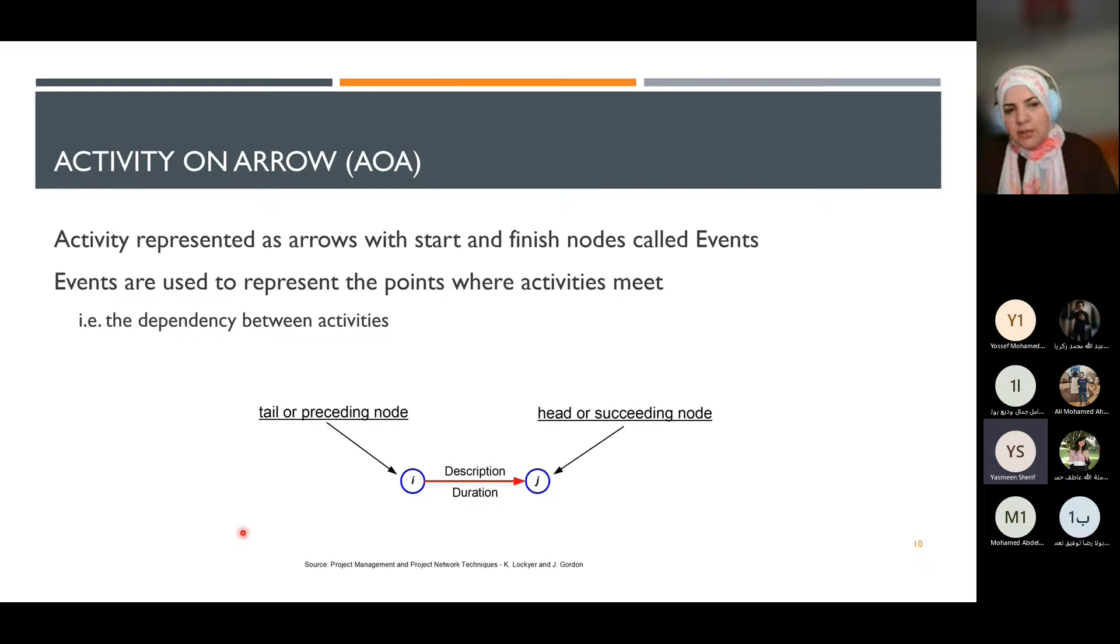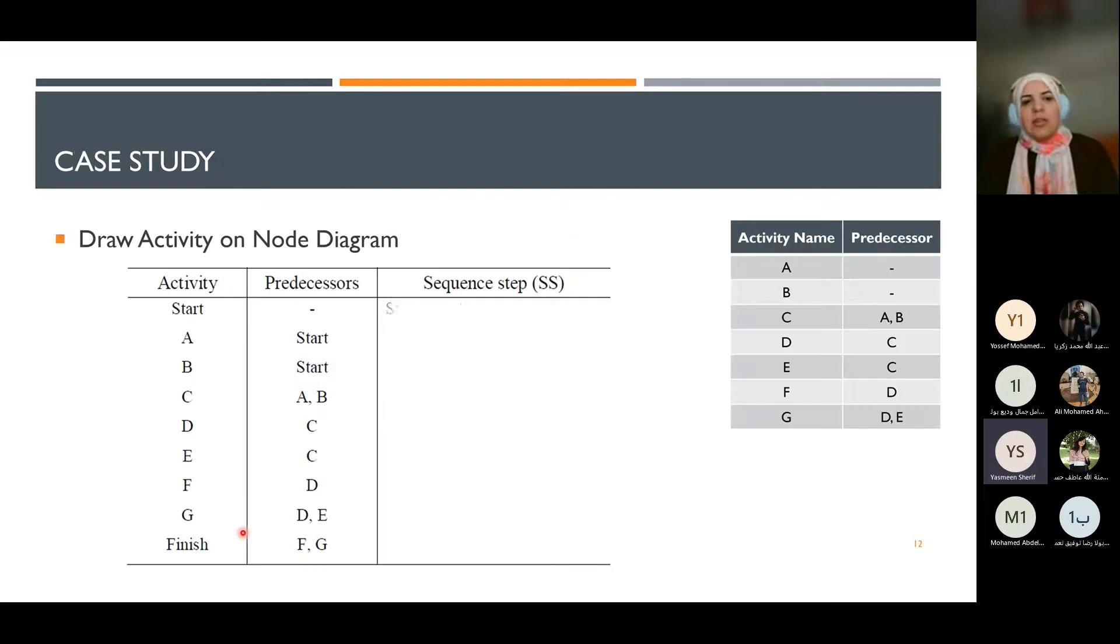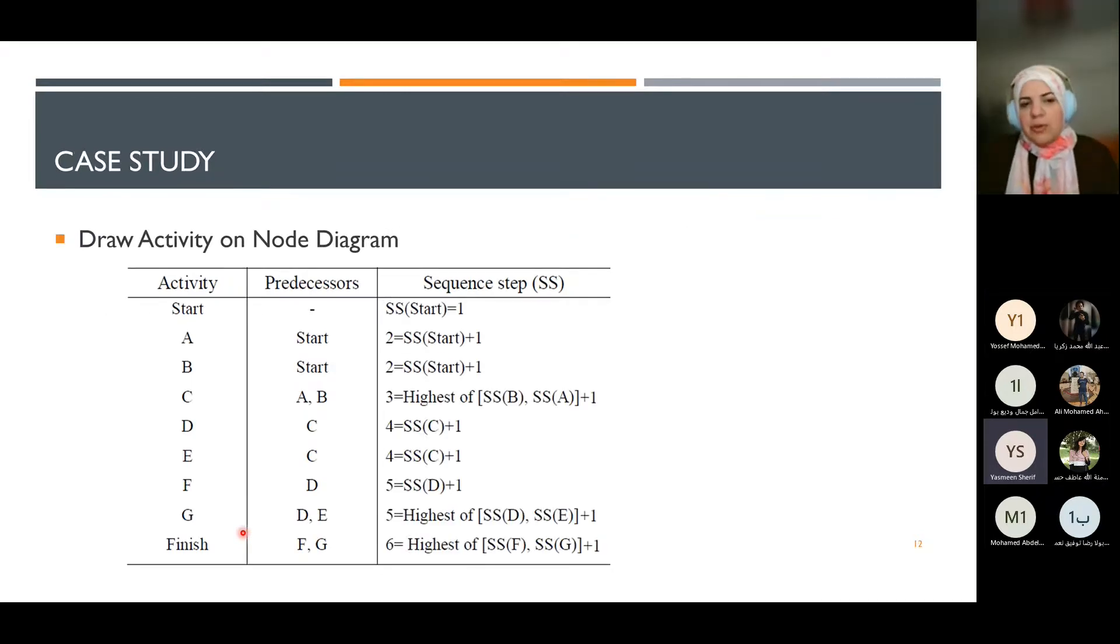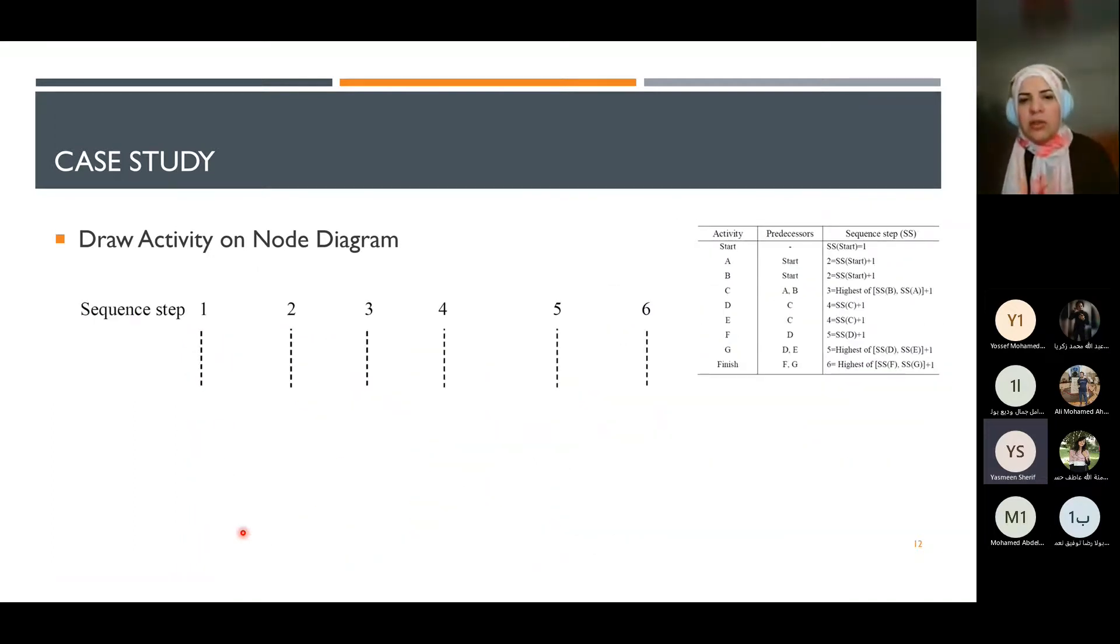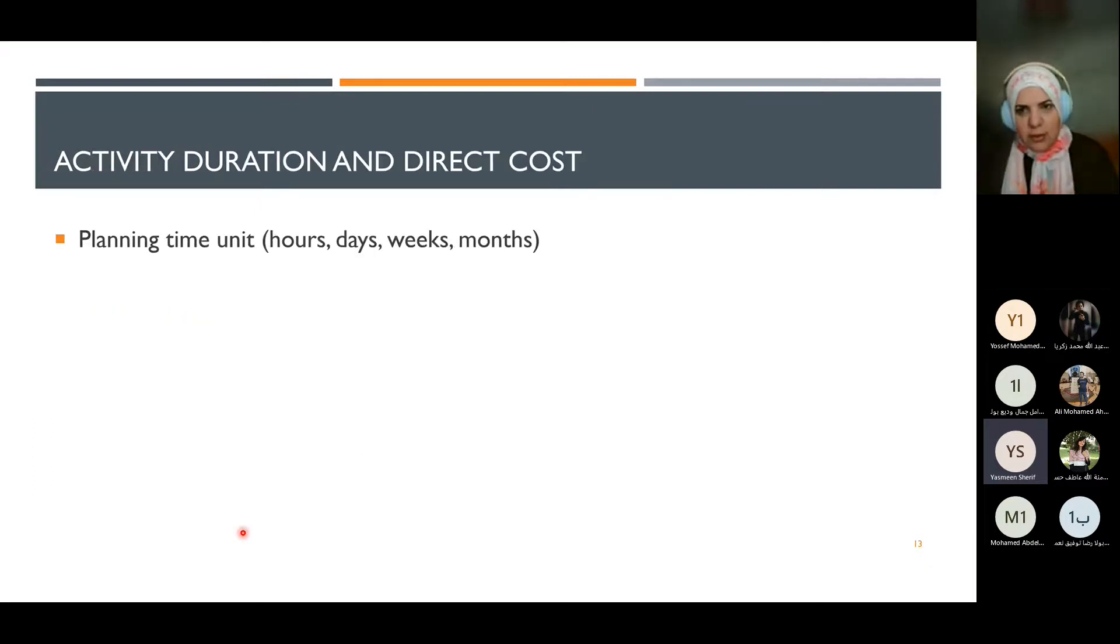Looking at activity on arrow, we use nodes to represent events. We introduce dummy activities to keep the network organized and ensure activities maintain proper relationships throughout the project.